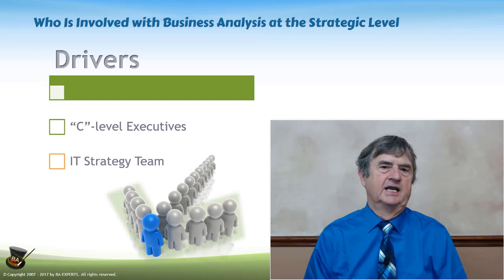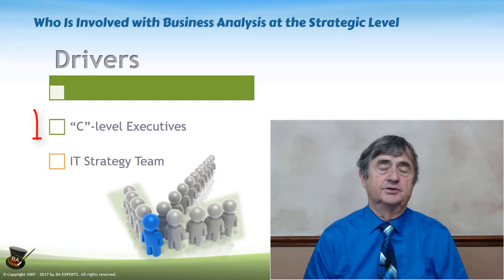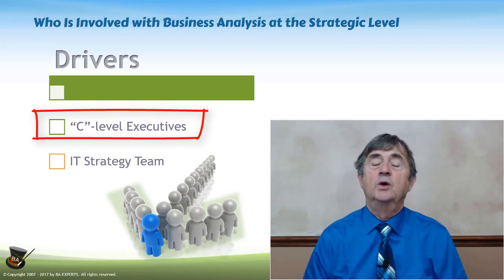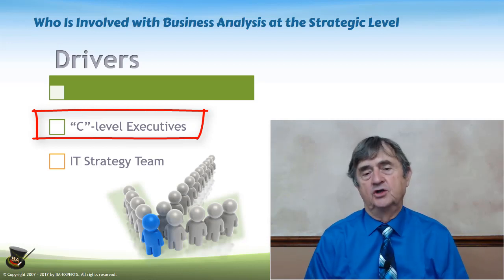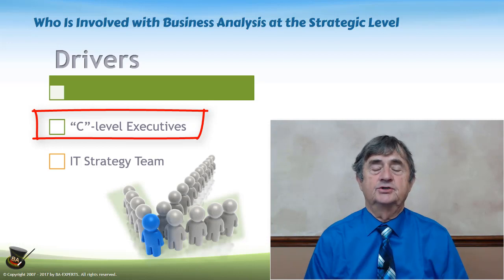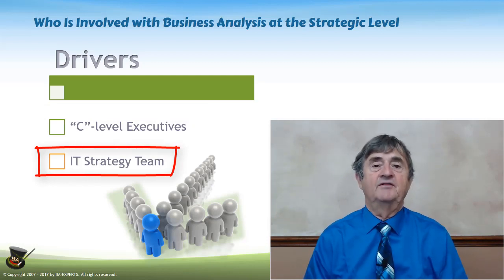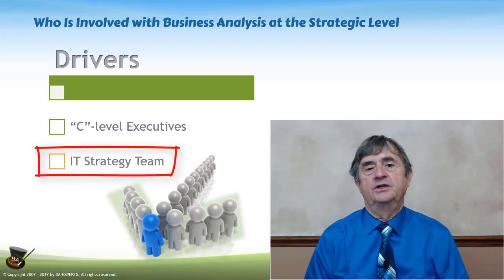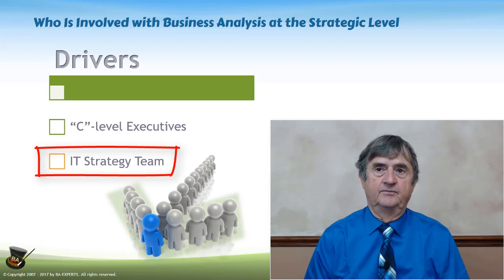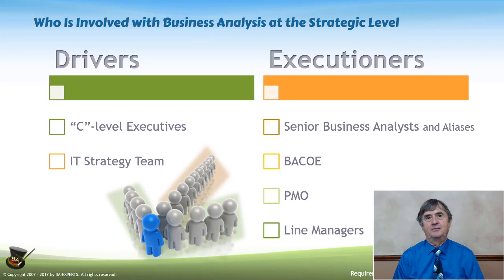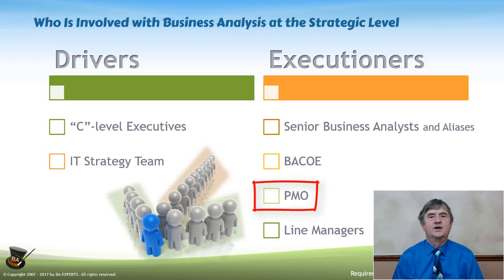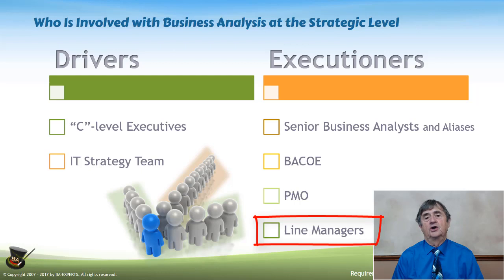Who is involved in strategic business analysis? The drivers are C-level executives — CIO, CEO, COO — or in large organizations, division executives, division managers, and department managers. IT strategy teams are also a driving force, with the authority and knowledge to determine where the organization should go. The executioners — those executing the process — are senior business analysts, the business analyst center of excellence, the project management office, and line managers directly in charge of the doing.